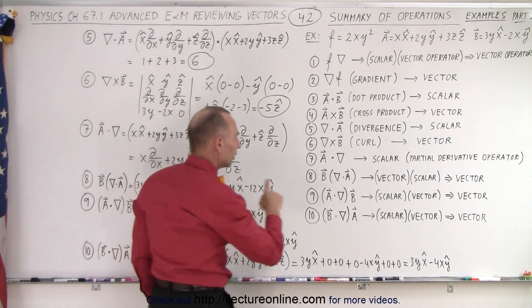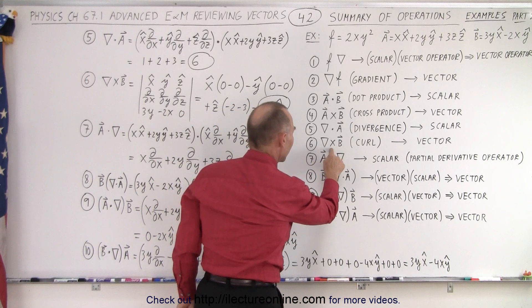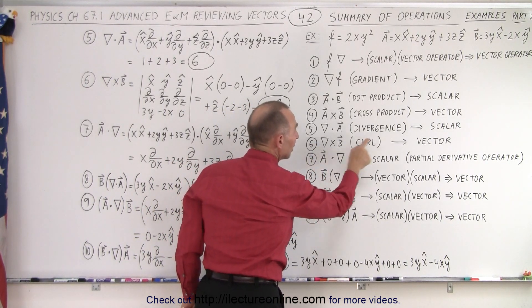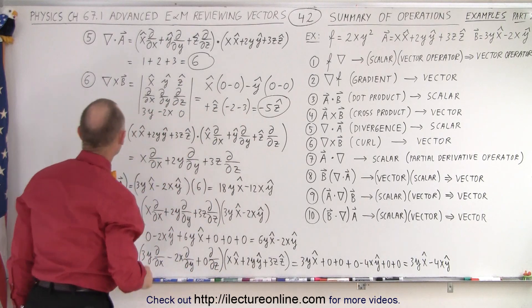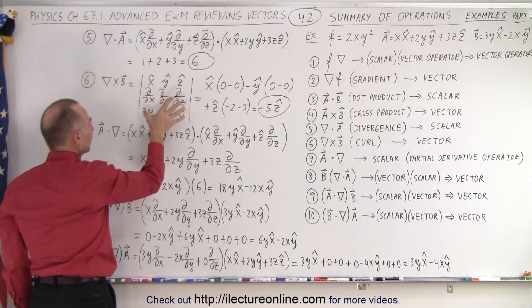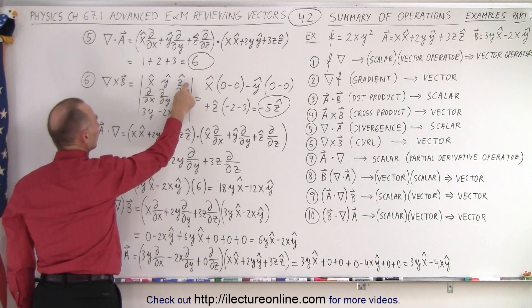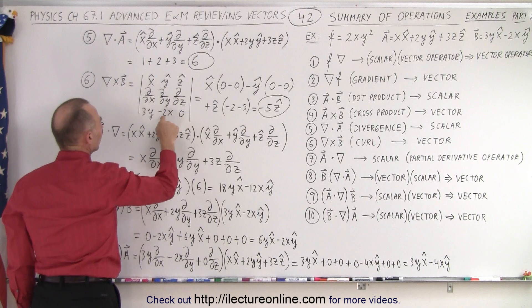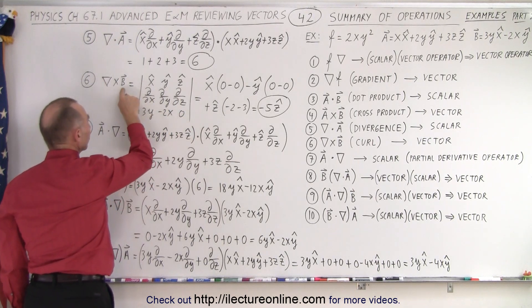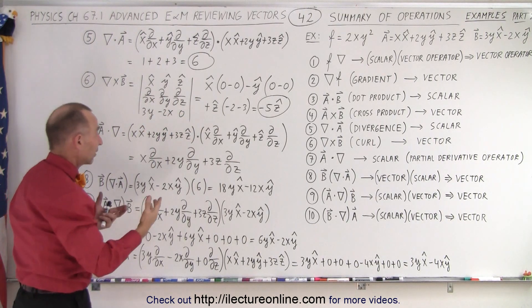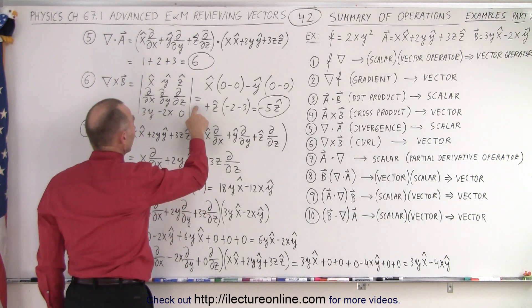Now for number 6, we're going to do the curl. We're doing the curl on vector B, which ends up with a vector quantity. When we take the curl, we use the matrix format. We put the x, y, and z unit vectors on the first row, the partial derivatives with respect to x, y, and z on the second row, and the components of the vector on which we operate on the third row. Then we use our matrix operation.